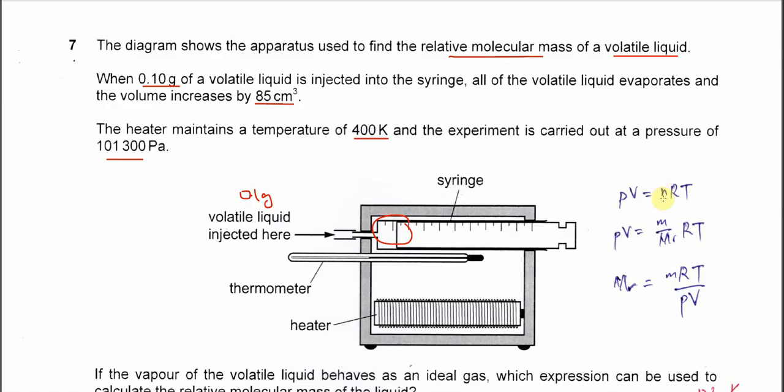So try to rearrange that. PV equals... because the mole equals the mass over molar mass, we have PV = mRT over molar mass. Rearranged, molar mass is mRT over PV. So we use this for the expression later.